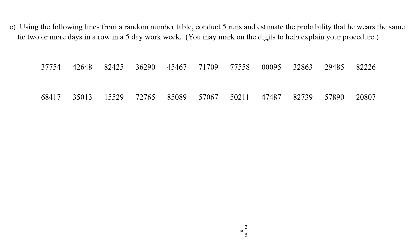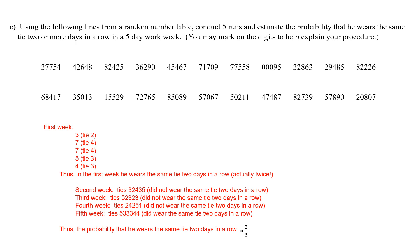For part C, using five runs from the random number table, we mark digits to explain our procedure. In the first week, the digits are 3, 7, 7, 5, 4 — corresponding to ties 2, 4, 4, 3, 3 — so he wore the same tie two days in a row, and that actually happens twice. In the second week, he uses ties 3, 2, 4, 3, and 5, so he did not wear the same tie two days in a row.